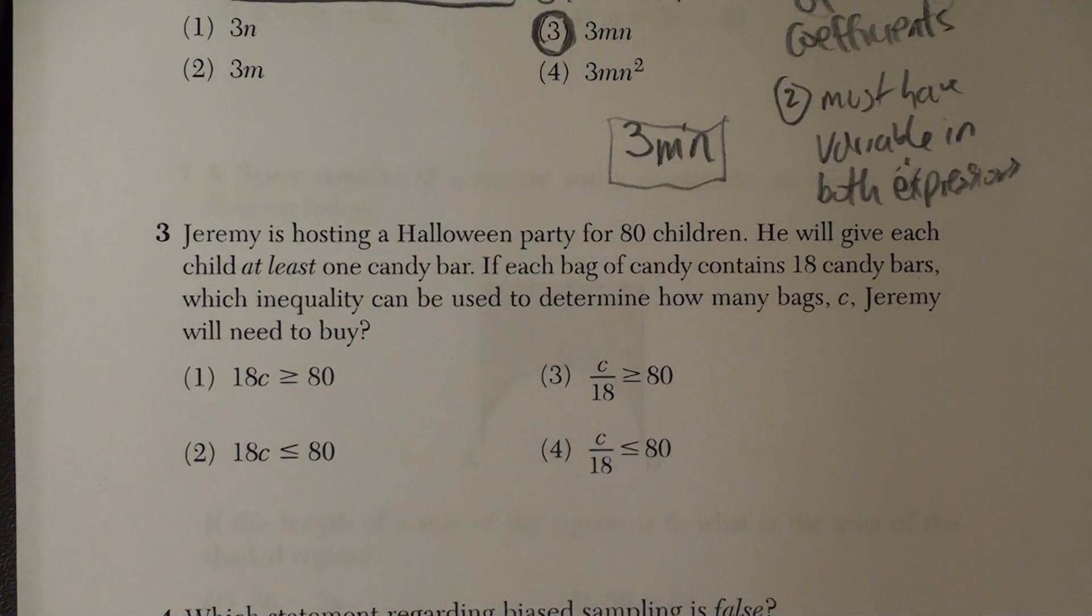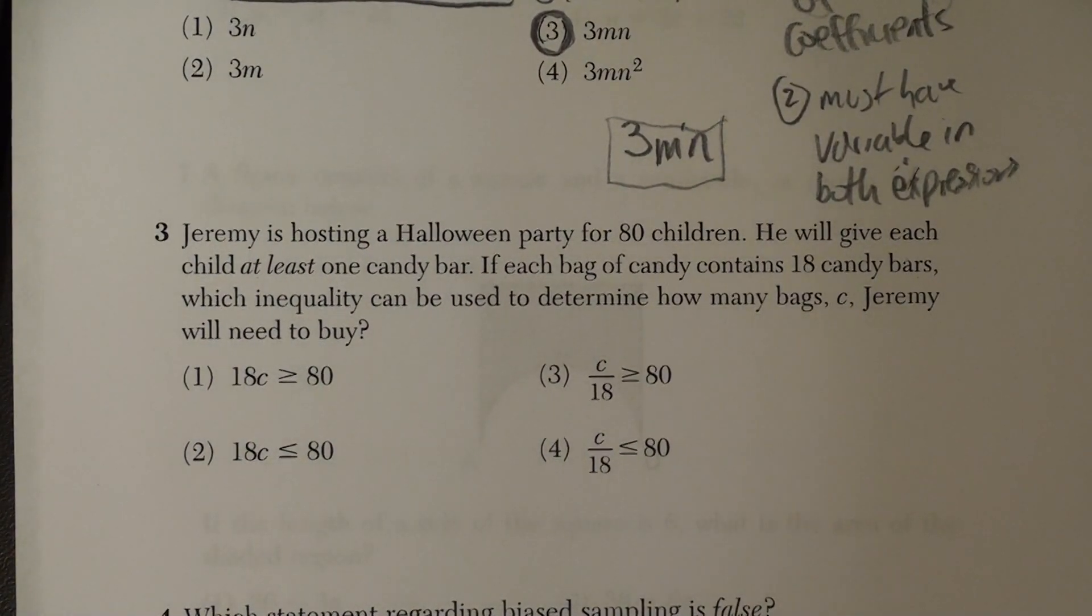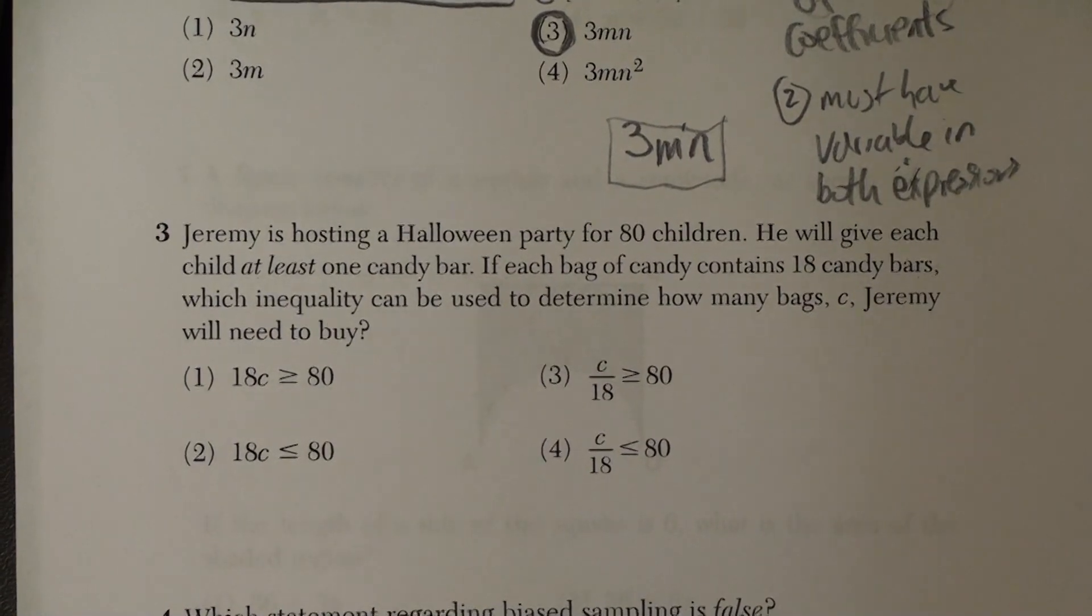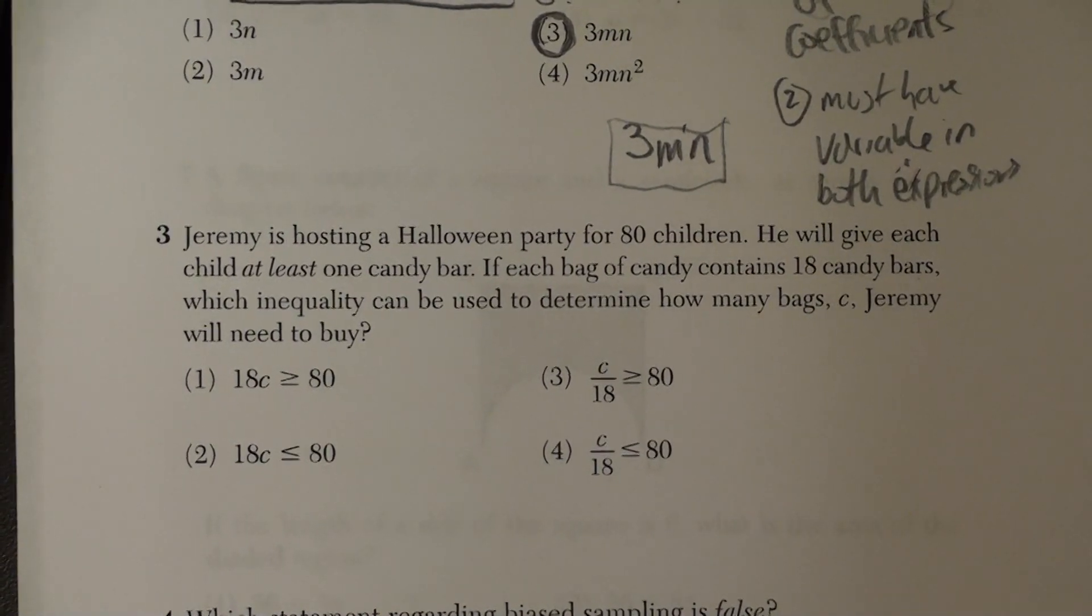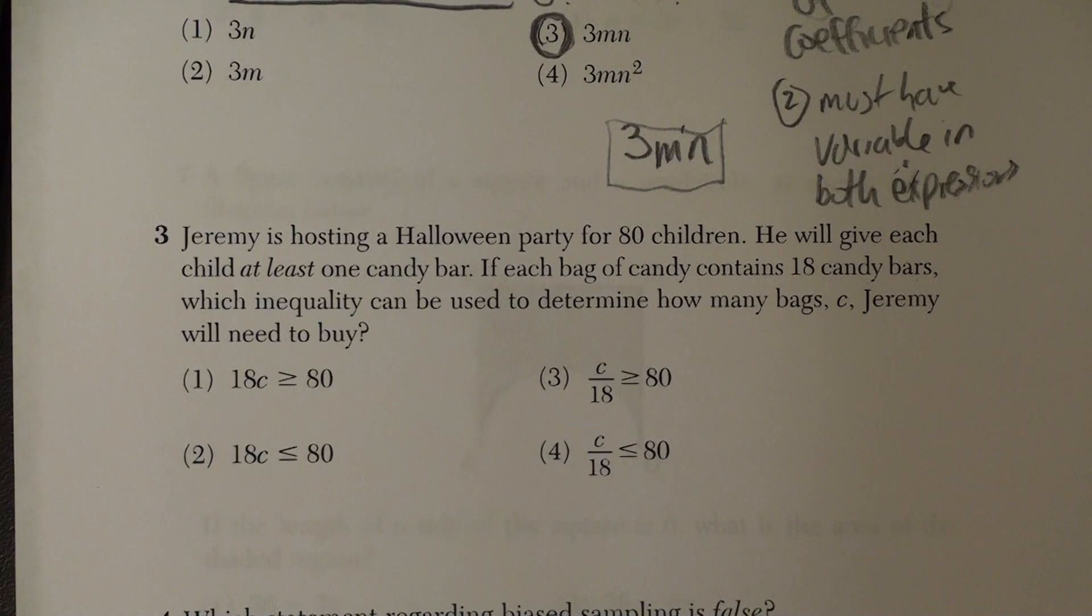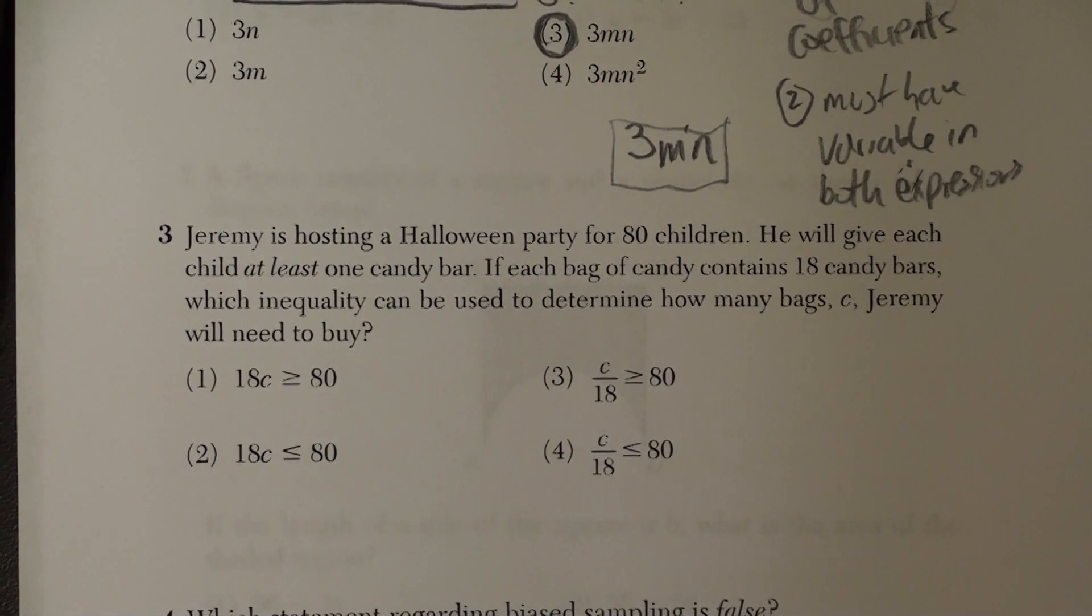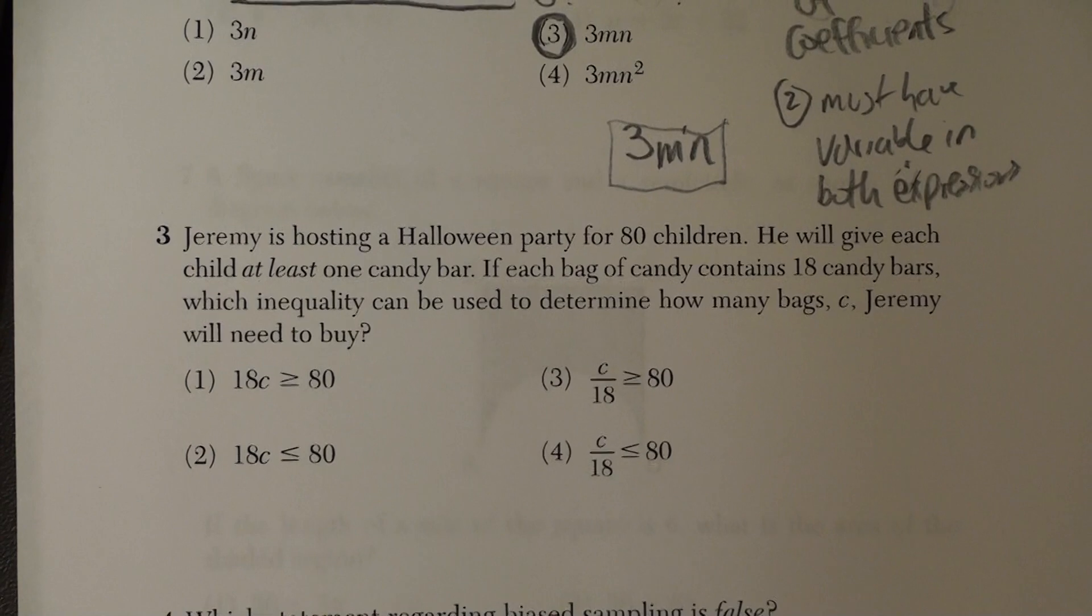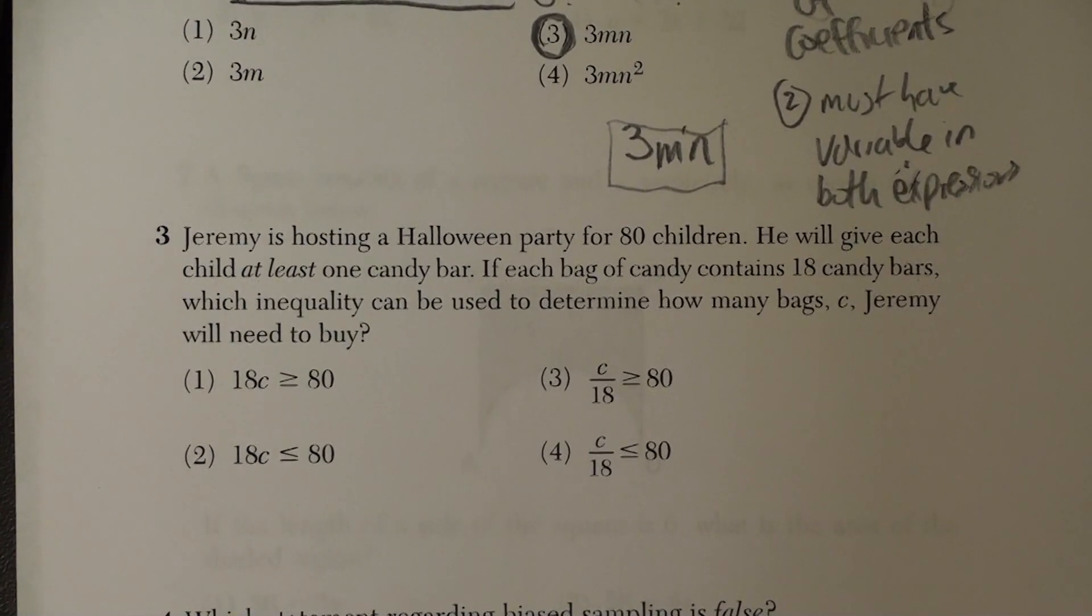Jeremy is hosting a Halloween party for 80 children. He will give each child at least one candy bar. If each bag of candy contains 18 candy bars, which inequality can be used to determine how many bags, C, Jeremy will need to buy?